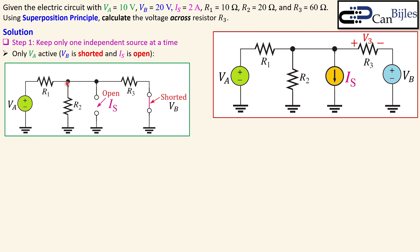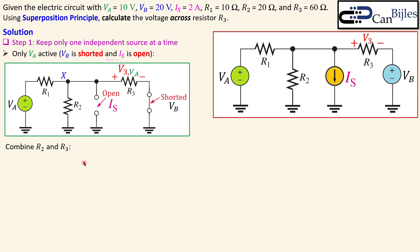With Va active, we have Va, R1, and then R2 and R3 in a specific configuration. To calculate the voltage across R3 due to Va, we note that R3 is in parallel with R2. We need to first combine them, because there will be current flow through both, and we cannot simply use the voltage divider rule for R1 and R3 only.